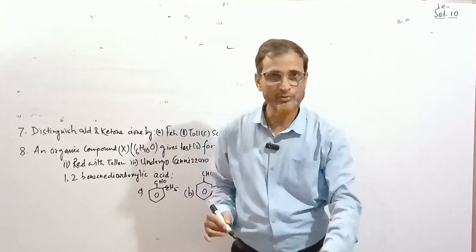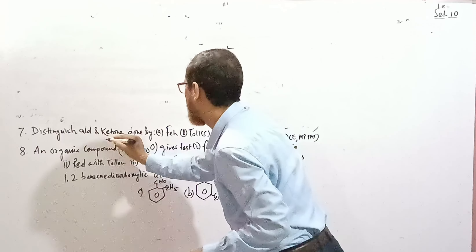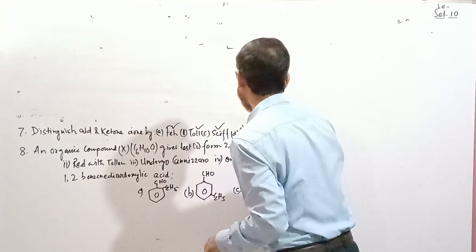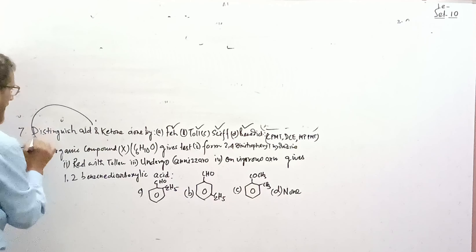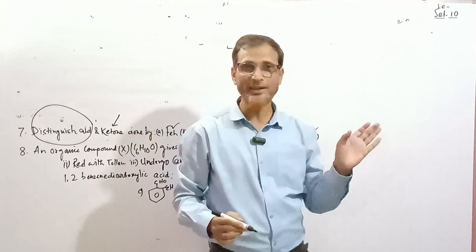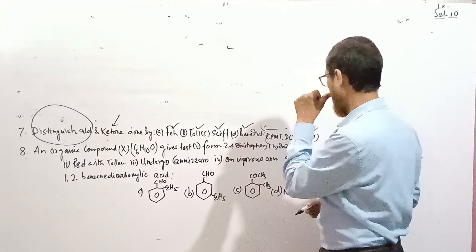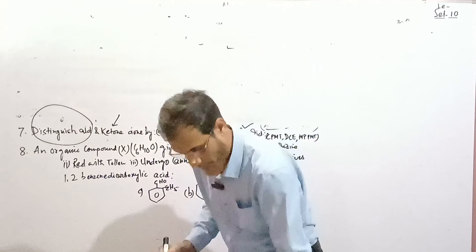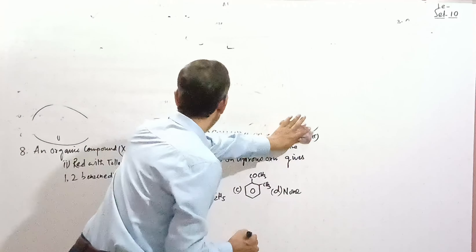Question: How are aldehydes and ketones distinguished? Reagents such as Fehling, Tollens, Schiff's, and Benedict all react with aldehydes but not with ketones. Thus we can distinguish aldehydes from ketones using any of these reagents. Asked in CPMT, DC, and PMT.